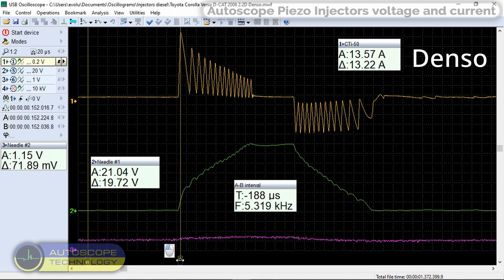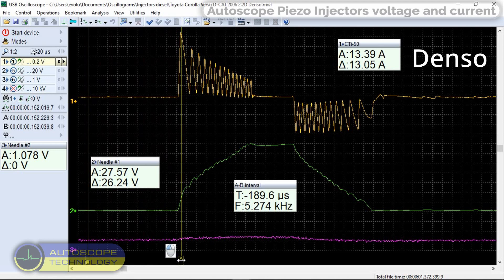Using cursor A, we measure the control current. The maximum current is just over 13 amps.